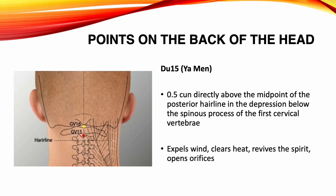Du 15, Yaman. Location: 0.5 Sun directly above the midpoint of the posterior hairline, into the depression below the spinous process of the first cervical vertebra. Functions: expels wind, clears heat, revives the spirit, opens orifices. Indications: headache, stiffness of the neck, mental disorders, epilepsy, deafness, muteness, sudden hoarseness of the voice, stiffness of the tongue, aphasia, hysteria, paralysis.